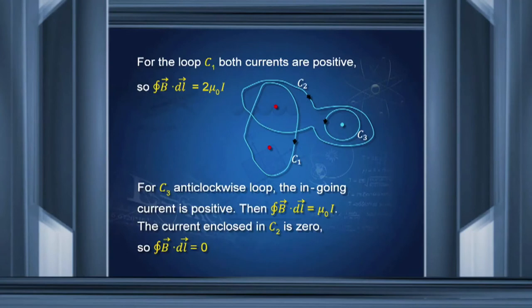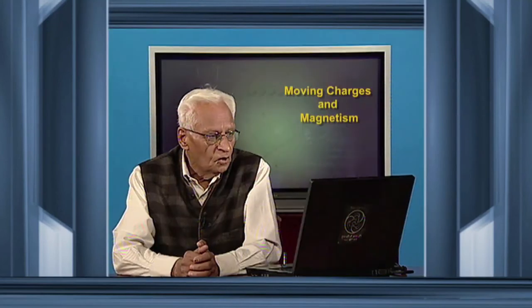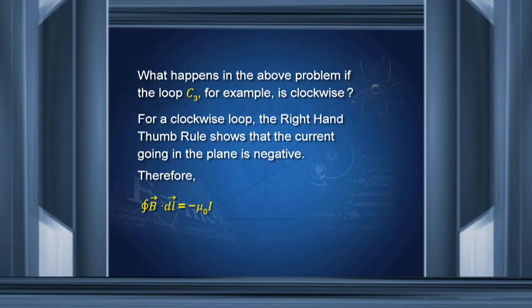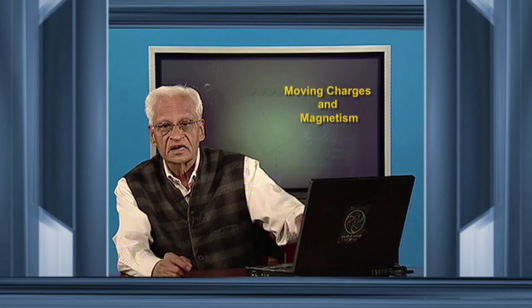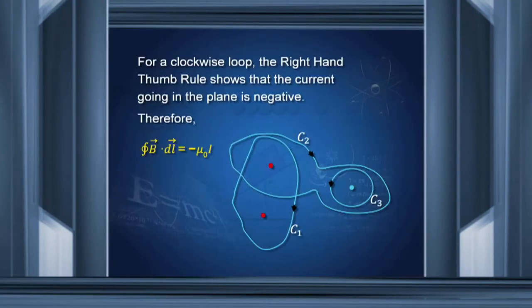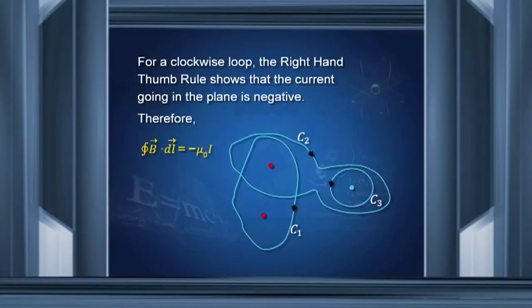For C3, B dot dL is equal to mu_0 I. The important thing is that considering the direction of the loop, you must find out the positive direction of the current. What happens if loop C3 is made clockwise instead of anticlockwise? Then this current becomes negative with respect to the direction of the loop, and therefore the integral of B dot dL becomes minus mu_0 times I. So every time, you have to determine whether the current is positive or negative considering the direction of the loop.